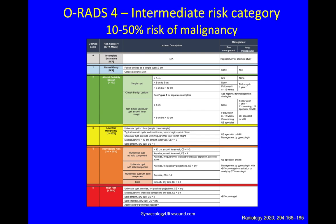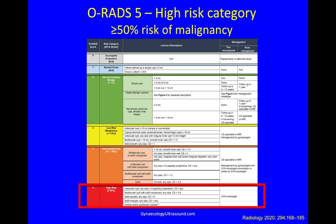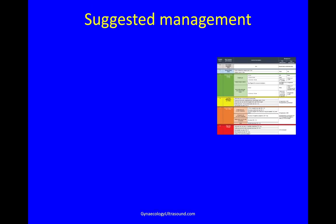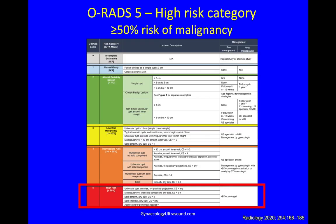Low-risk malignancy is ORADS 3 with an ADNEX score of 1 to 10%. Intermediate risk is ORADS 4 with ADNEX score 10 to 50%. With these kinds of masses, don't say complex — using IOTA terminology you can express it so much better. The high-risk group is ORADS 5, with an ADNEX score more than 50%. These are typically malignant masses that definitely need to be seen by a gynaecological oncologist.